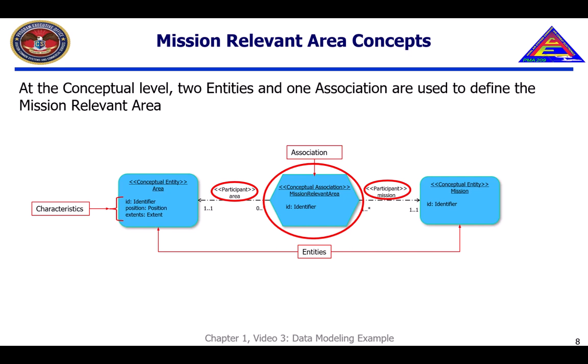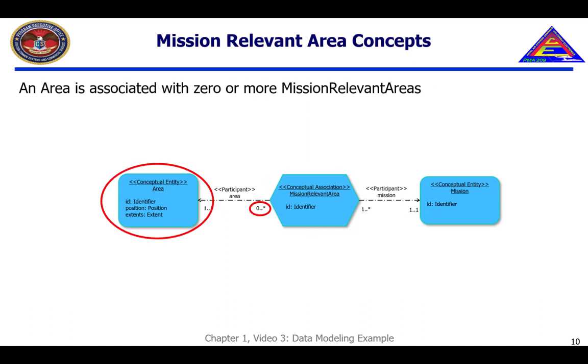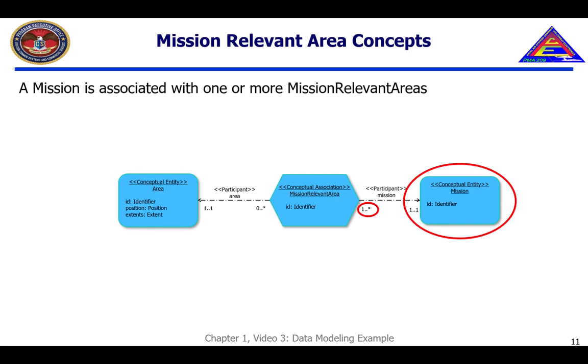For each participant, there are multiplicities associated to further characterize the relationship. For any mission-relevant area, there are exactly one area and one mission, indicated by the respective participant multiplicities labeled one-to-one, nearest to the area and mission conceptual entities. Given any area, it can be a part of zero or more mission-relevant areas, as shown by the zero-to-star multiplicities. A given mission is associated with one or more mission-relevant areas, as shown by the one-to-star multiplicity.